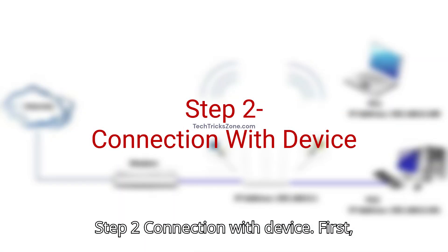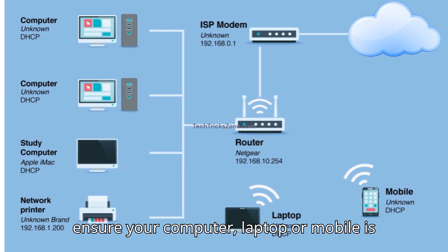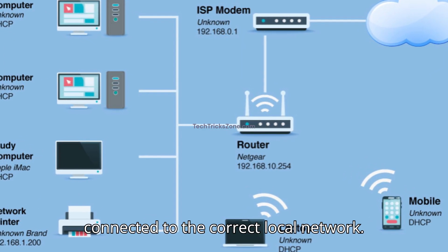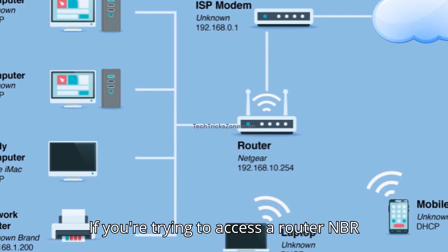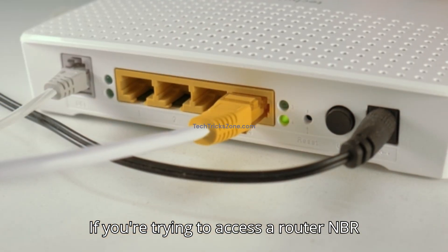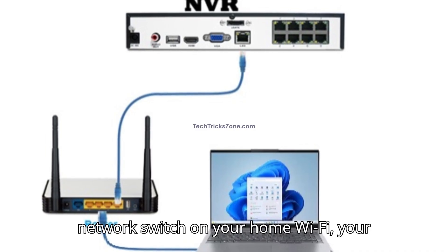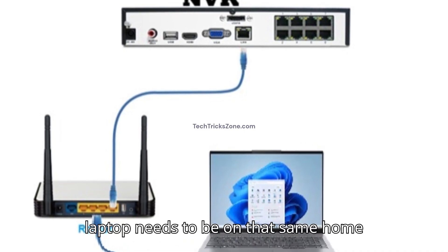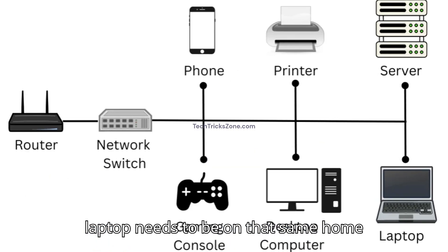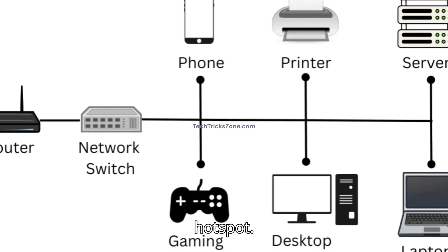Step 2: Connect with the device. First, ensure your computer, laptop, or mobile is connected to the correct local network. If you're trying to access a router, NVR, or network switch on your home Wi-Fi, your laptop needs to be on that same home Wi-Fi — not a guest network or mobile hotspot.